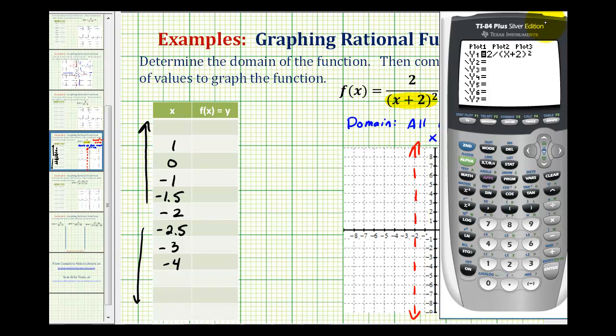Let's take a quick look at the graph on the calculator before we use the table of values to complete this table. If we press zoom six, we'll have the standard window. And we can see that we do have a vertical asymptote at x equals -2. And we also see the two pieces of the function.